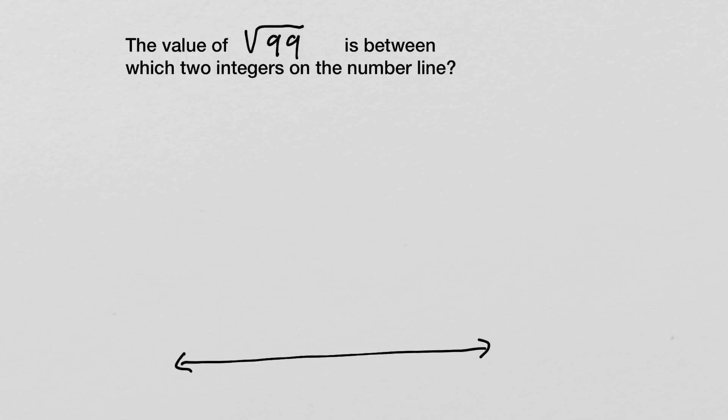So in order to do this, we first need to understand what a square root is. The square root is basically asking us which two identical numbers, when multiplied by themselves, give you 99.